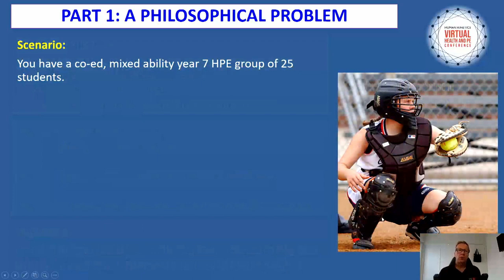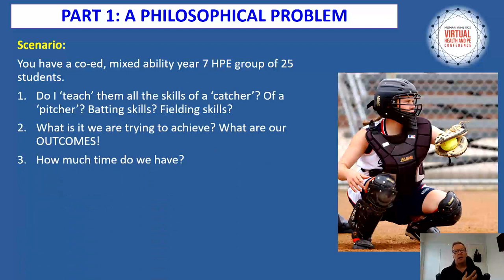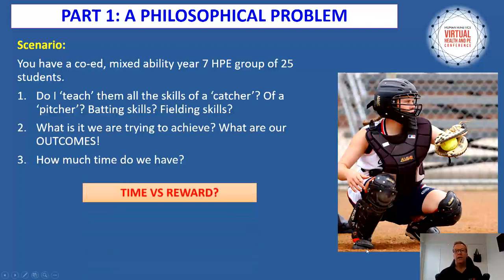Let's start with a philosophical scenario: a co-educational, mixed ability year seven group, around 12 to 13 years of age, with 25 students. Are we trying to teach them all the skills of a catcher, a pitcher, all the batting and fielding skills? What are we trying to achieve, and what are our outcomes? This all ties back to how much actual time we have — it comes down to time versus reward, and what students are getting out of the time we put into them.